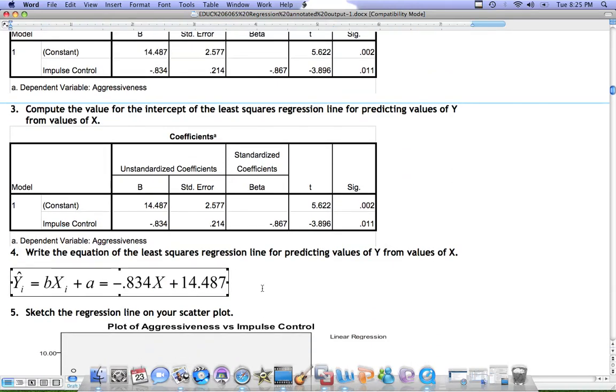The equation of the line is Y hat, denoting that this is a regression line rather than a regular line, equals negative 0.834x plus 14.487.